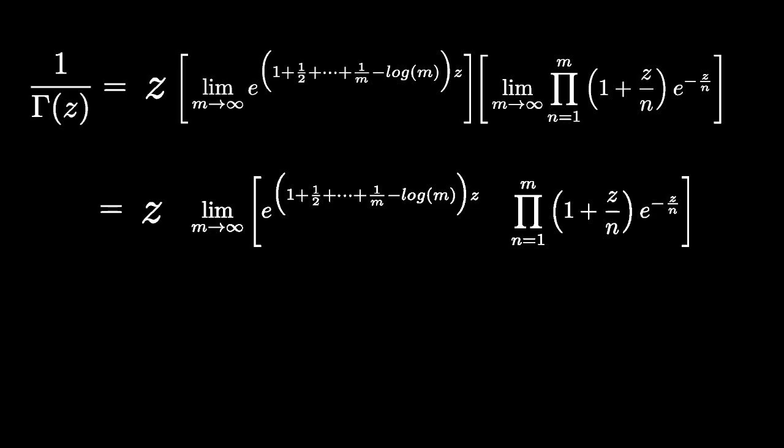We can use standard rules for exponentials to take the factor e to the minus log of m times z out of the first term. And this is equal to m to the minus z.